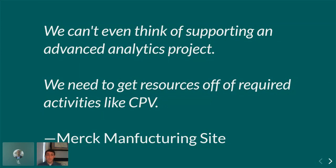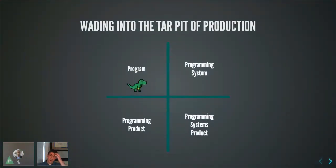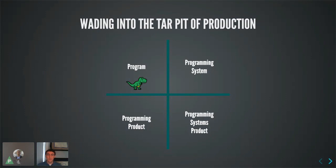When thinking about having an app that supports all this in production, it's much more than just that core functionality of creating automatic reports. I think about this from the perspective of the classic computer science textbook by Fred Brooks — 'The Mythical Man-Month' — which breaks software into four quadrants. In the lower right is the 'programming systems product,' which is what we'd call production.